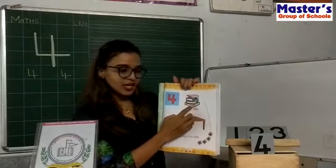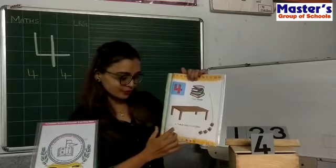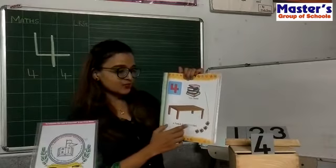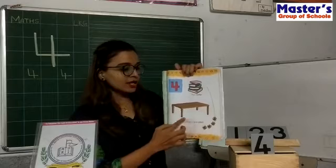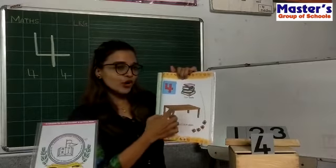One, two, three, and four. A table has 4 legs.